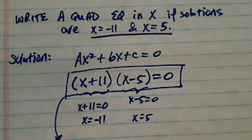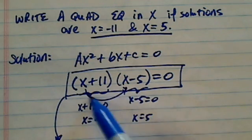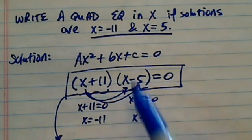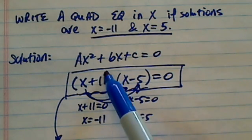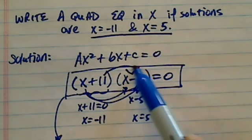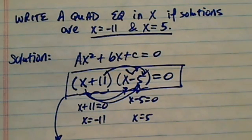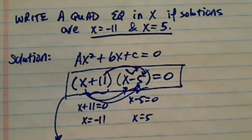Now let's expand this. x times x is x squared minus 5x. Then for the outer and inner terms: 11x minus 55. Combining them, you have x squared plus 6x minus 55 equal to 0.